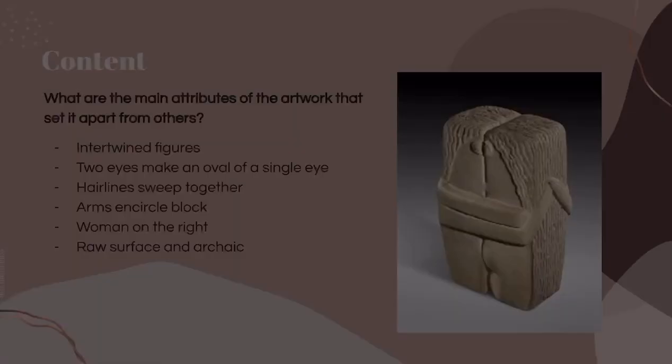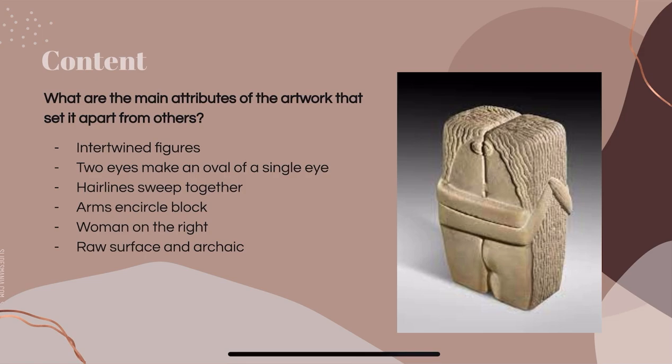For content, the main attributes of the artwork are the intertwined figures that merge into a single form. The two eyes make an oval of a single eye, and the hairlines sweep in a continuous arch. The arms also join to encircle the cubic block. We can see the woman on the right, who is slightly thinner, her eyes are slightly smaller, and the bulge suggests a breast.